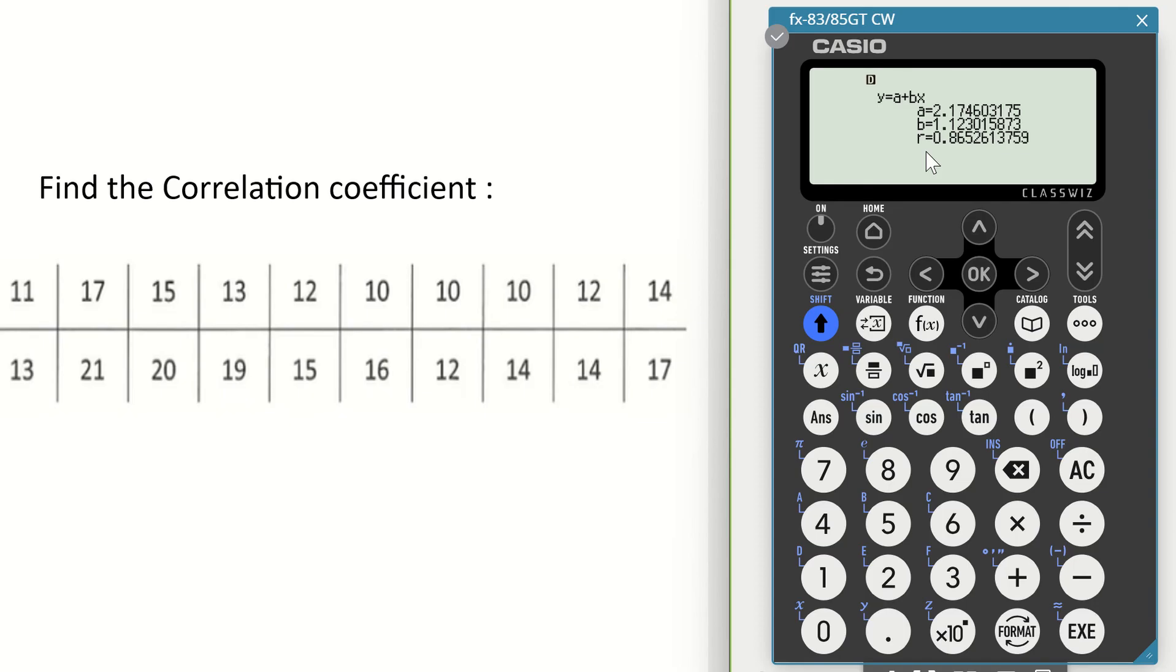Depending on the question, it may ask you to round it to one decimal place or two decimal places. Just remember that your correlation coefficient will always be between minus 1 and positive 1, where you have positive correlation from 0 to 1 and negative correlation from 0 to minus 1.